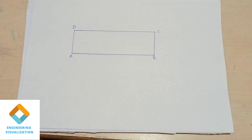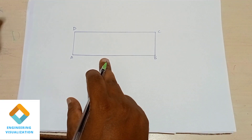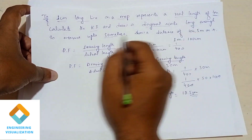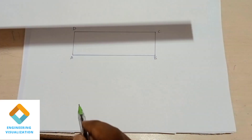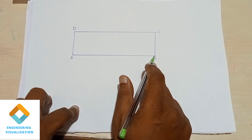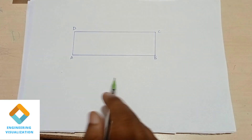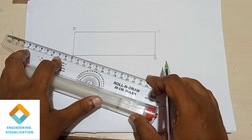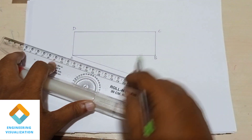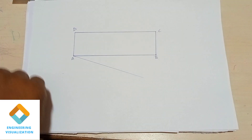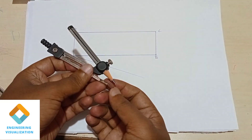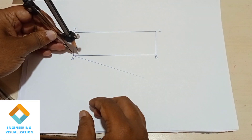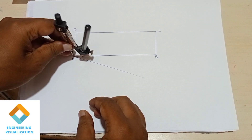I'll mark this as CD. Now the AB length has to be divided into 5 equal parts. In order to make the diagonal scale measure up to 50 meters, we divide the AB line into 5 equal parts. At the corner end I'll draw an angle line that should be less than 90 degrees. Using the compass I'll cut five arcs so it will be divided into five equal parts.